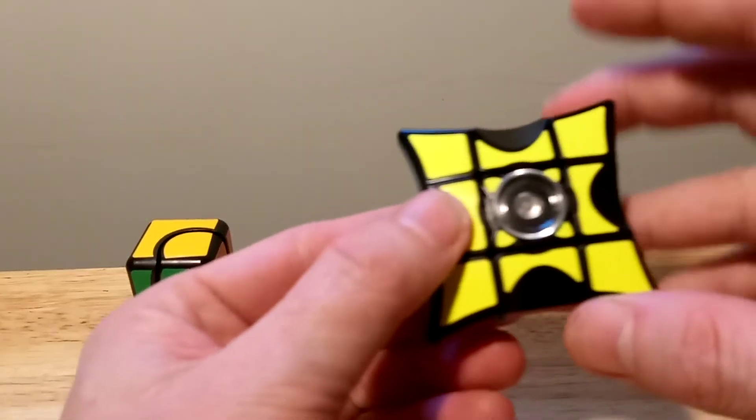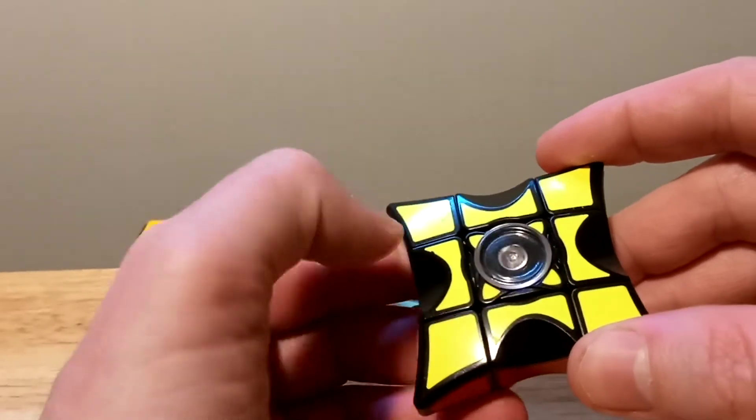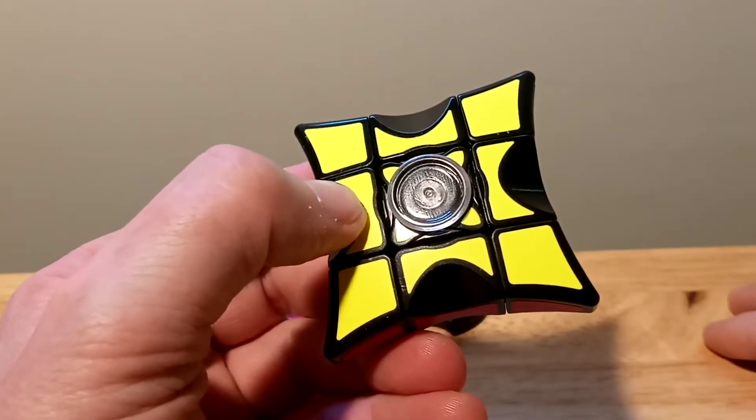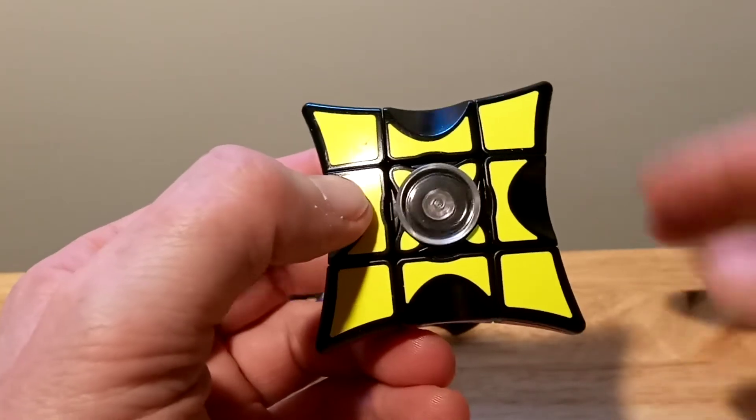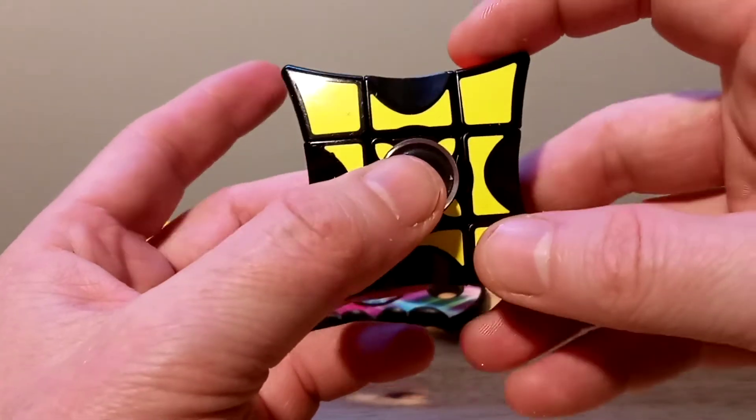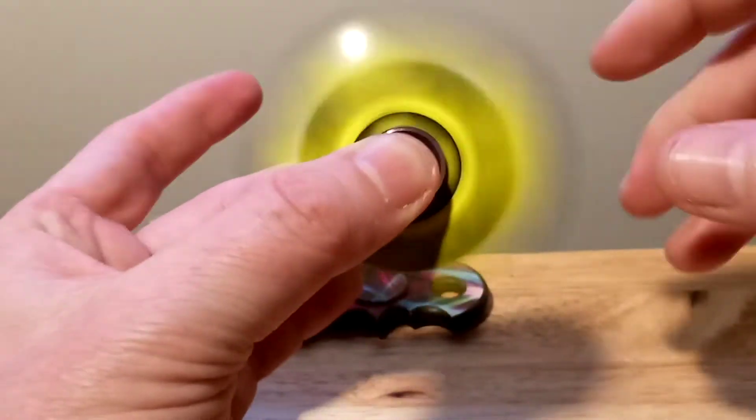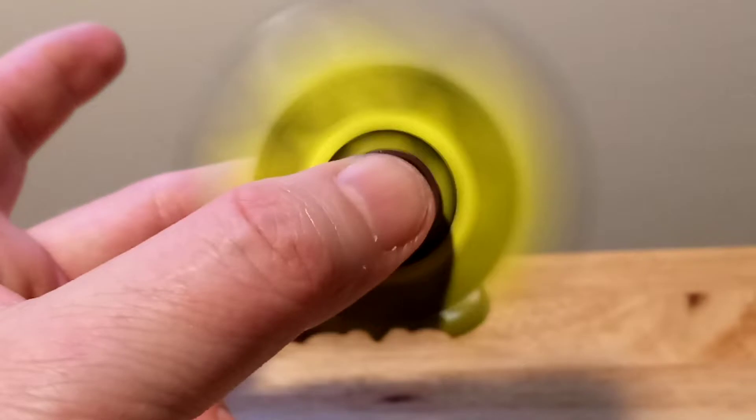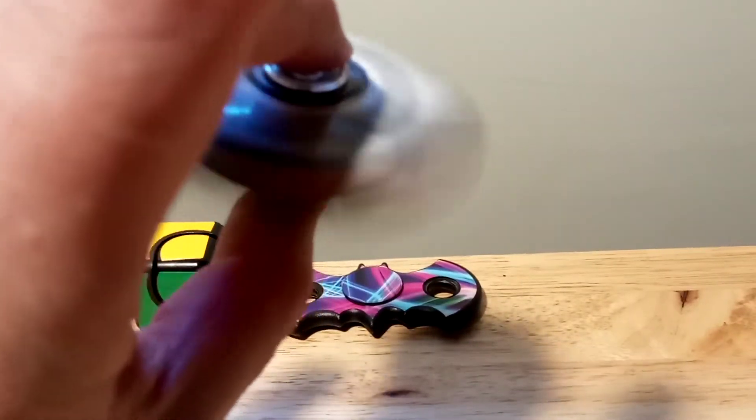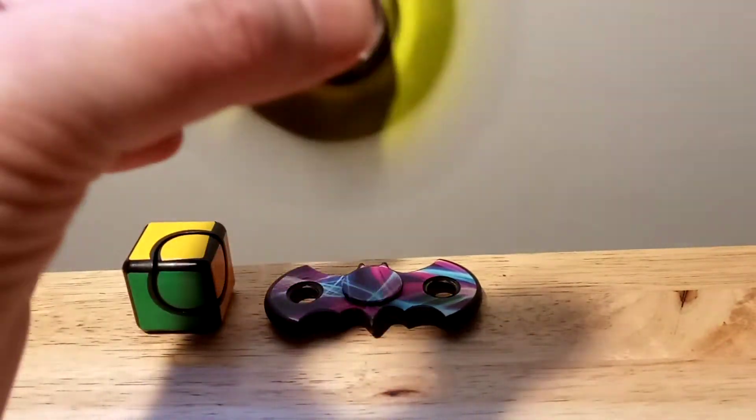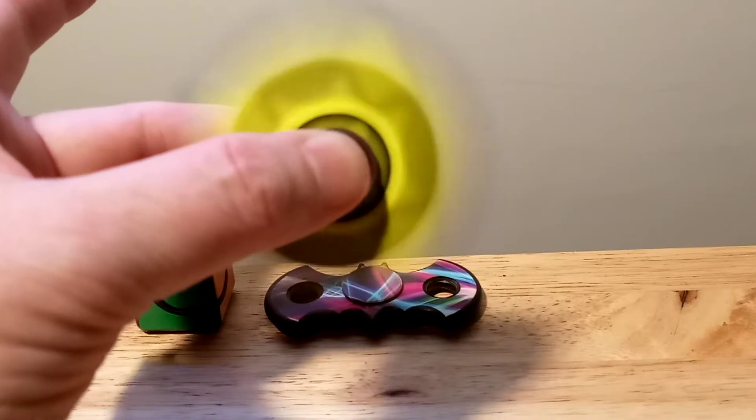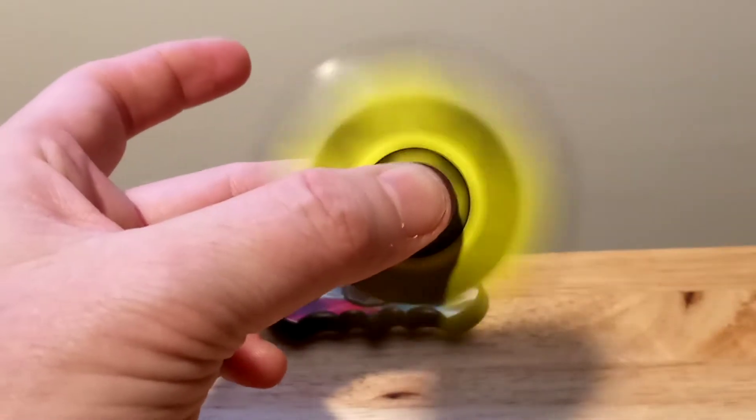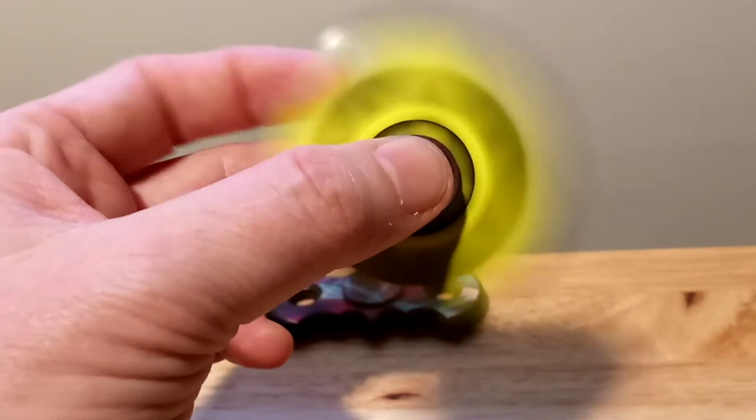We got the Chi. This is the Chi 1x1x3. And this actually spins really well. Let me do it again. Yeah, it spins really well. And it goes for quite a long time. It's really nice. I really like this one.